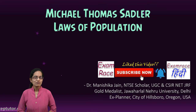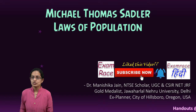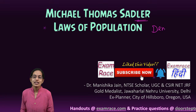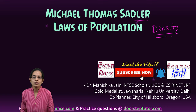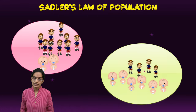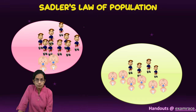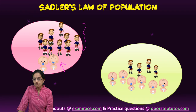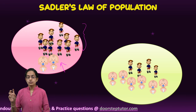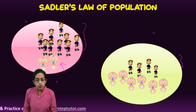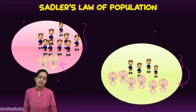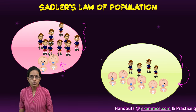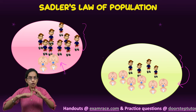The funniest part about this concept is that at most places you would find Sadler's theory listed as a destiny theory — however, it is not a destiny theory, it is a density theory. What Sadler was trying to explain was that in regions where you have higher density you would have lower fertility, and with fewer population you would have more number of children.